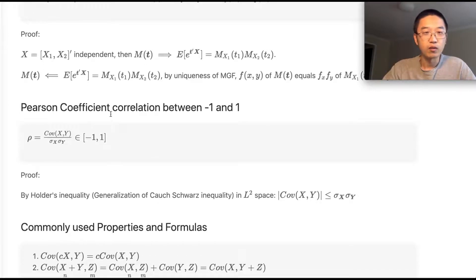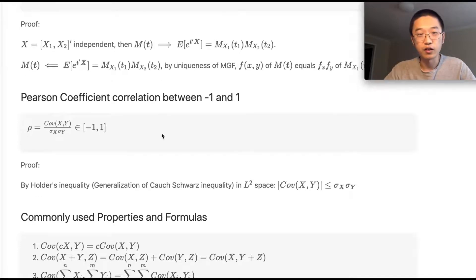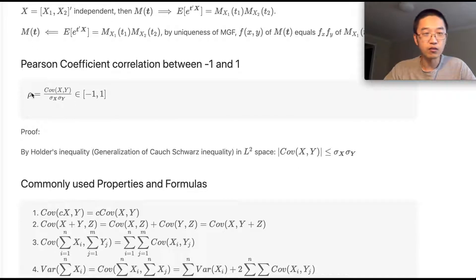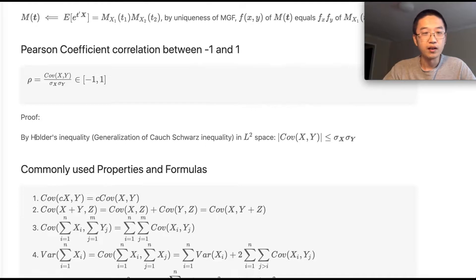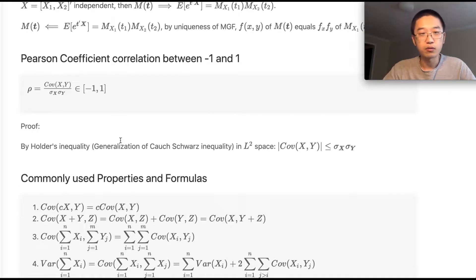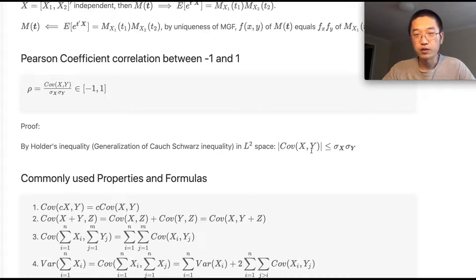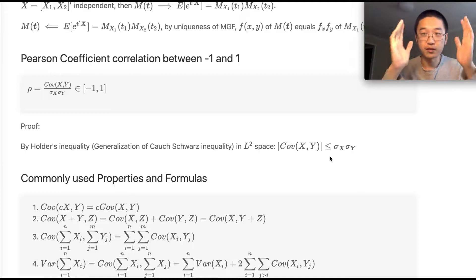The next thing I want to talk about is covariance and the Pearson correlation coefficient ρ. The value of ρ is between minus one and one. This is also very easy to prove — you just need to use the Cauchy-Schwarz inequality. The absolute value of the covariance is less than or equal to...